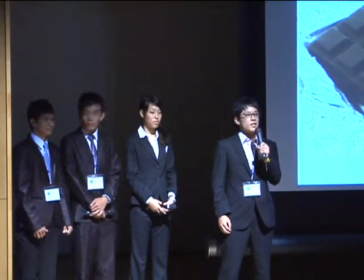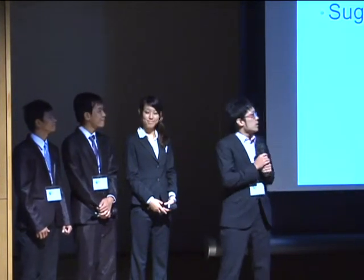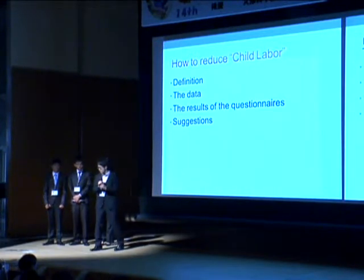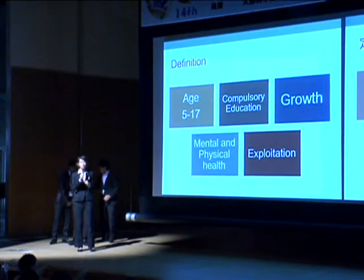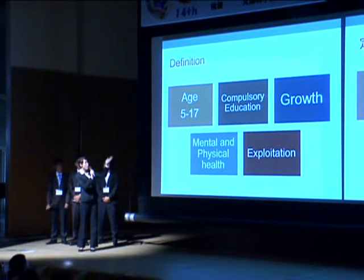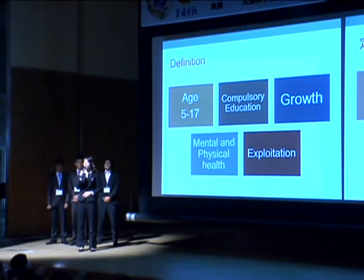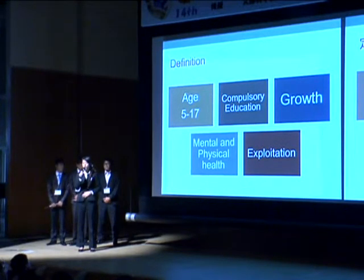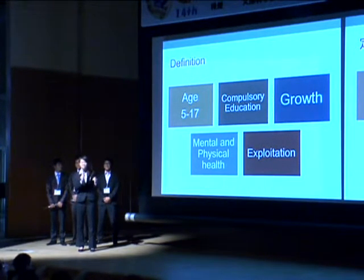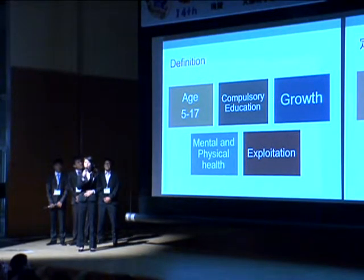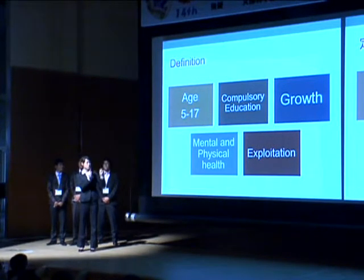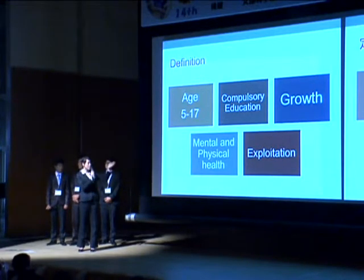Cacao plantations and coffee plantations are known for using child labor. We would like to present about how to reduce child labor. Child labor is defined as working children aged 5 to 17. Age refers to the lowest age that people can be employed in a country by law. Other factors depend on the working environment: employment which prevents children from receiving compulsory education, and work which impedes growth or harms children's mental and physical health.